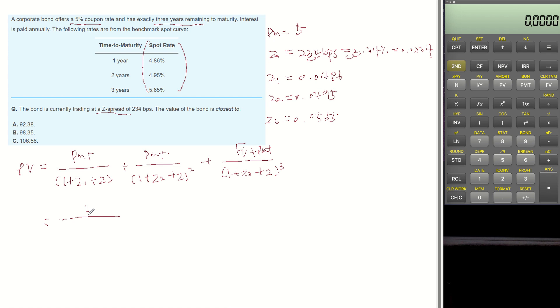becomes 5 divided by (1 plus 0.0486 plus G-spread 0.0234), plus for the second year, 5 divided by (1 plus year 2 spot rate 0.0495 plus G-spread 0.0234) to the power of 2...